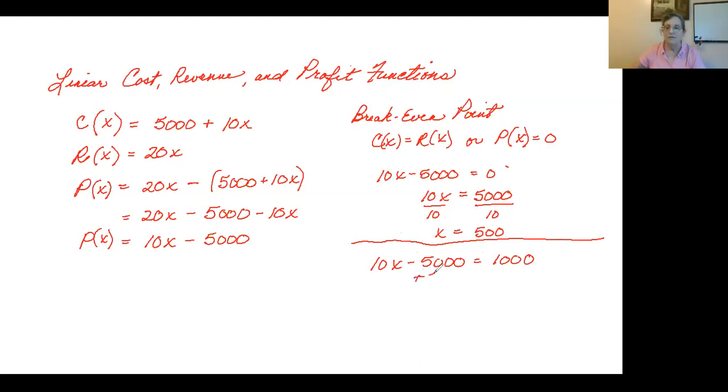Add the $5,000 to both sides. So in order to make $1,000 a month profit, we have to actually sell $6,000 worth of birdhouses, and at $10 a piece, that would be 600 birdhouses.